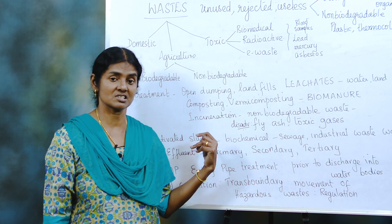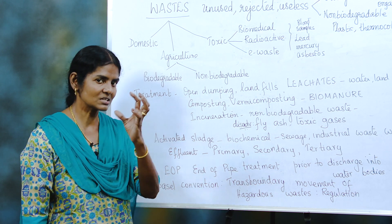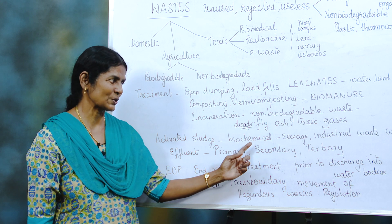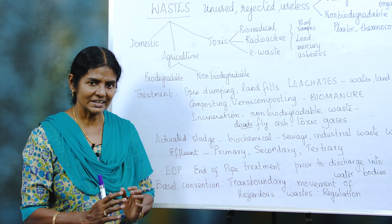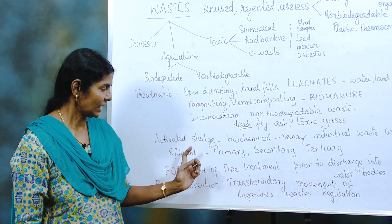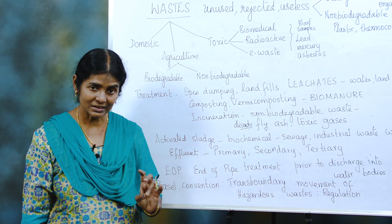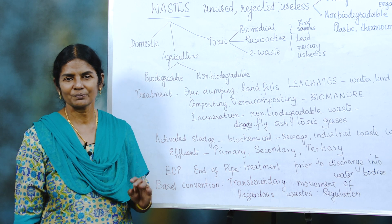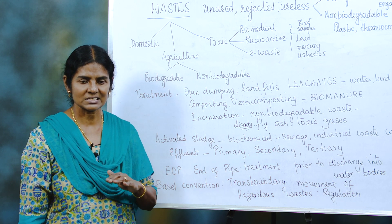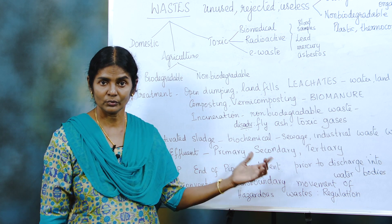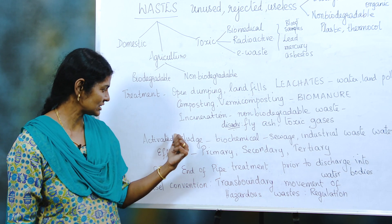The activated sludge process is also one of the treatments. In activated sludge, we form a sludge using microbes. Industrial wastewater and sewage are treated with microbes — so biological treatment happens here. These effluents can also be treated in three stages: primary treatment, secondary treatment, and tertiary treatment. In primary treatment, you remove all the heavy particles, dust and dirt — you allow it to settle down and sieve or filter it. In secondary treatment, we introduce microorganisms that break down the waste into sludge.